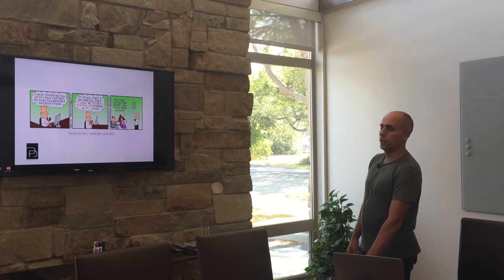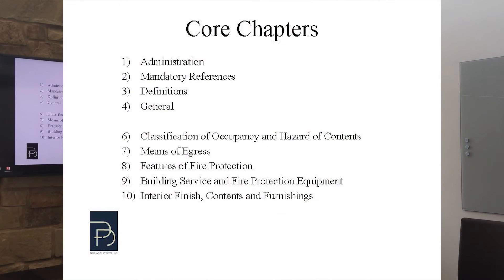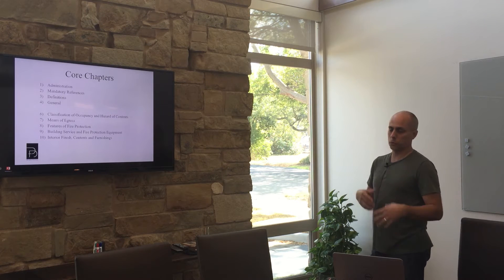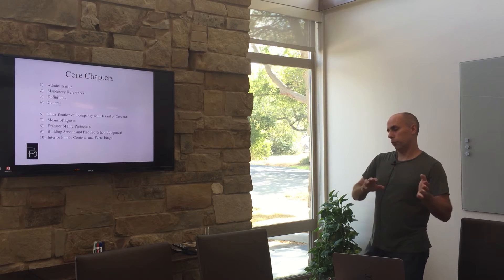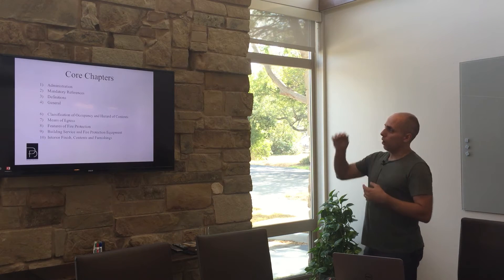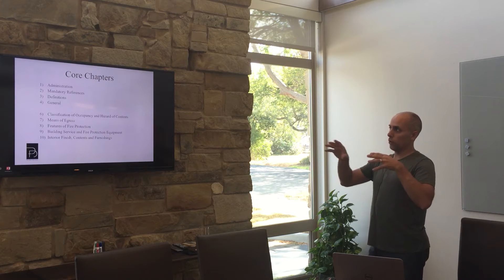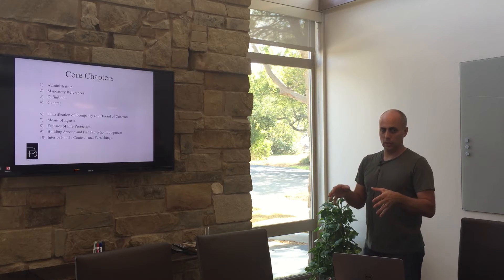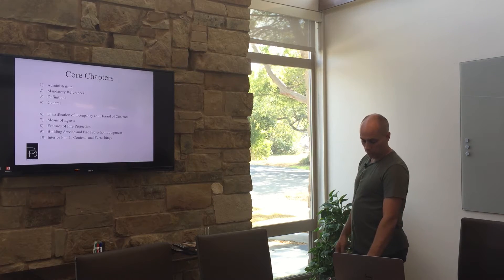Core chapters are chapters 1 through 4 and 6 through 10. These generally apply to every building or portions of them — they are the non-occupancy-specific chapters. Chapter 5 is the performance-based option. All other core chapters are applicable to the specific building you're working on in some way, but not necessarily in their entirety.